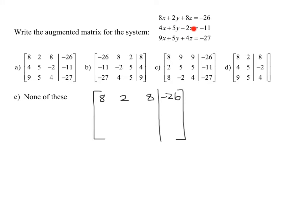Now let's look at my second equation. That's going to give me my second row. What are my coefficients? 4, 5, negative 2. And my constant's going to be negative 11.